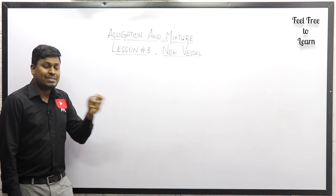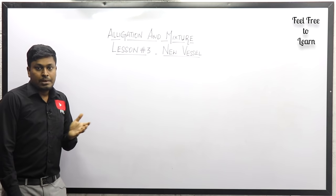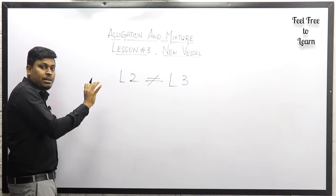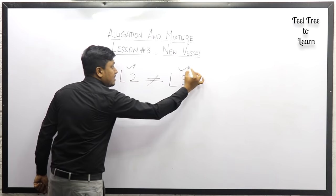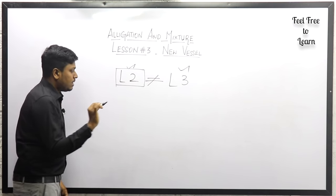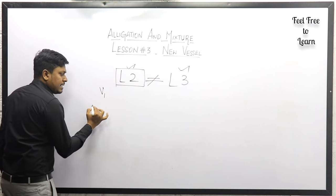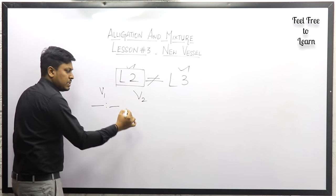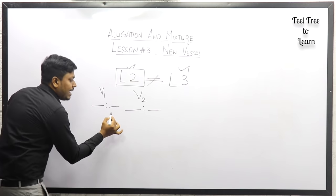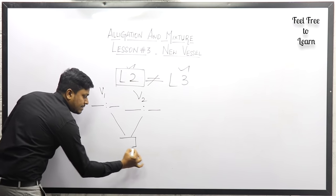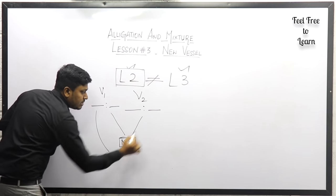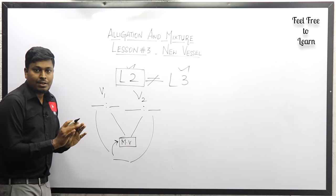Before solving the questions, let me explain what is the concept of lesson number three, because there is a huge difference between lesson two and lesson three questions. In lesson two, vessel number one contains milk and water in a ratio, and vessel number two also contains milk and water in a ratio. The concept was to mix both vessels to get a certain mean ratio — that mean value is given, and our target is to find in what ratio to mix the two vessels.